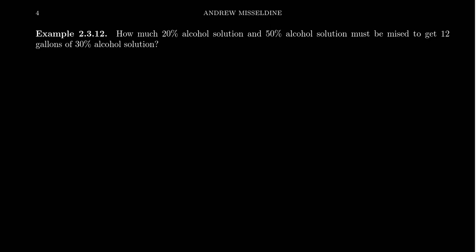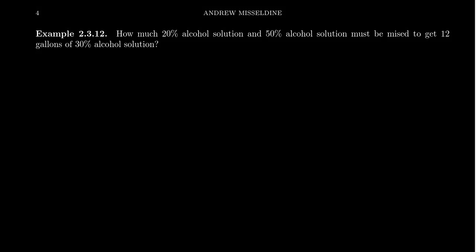In this video we're going to do another mixture problem where we'll be literally mixing materials. Imagine we're going to construct an alcohol solution. We want that solution to be 30% alcohol and 70% water, and we're going to accomplish this by combining a 20% alcohol solution that we already have with a 50% alcohol solution.